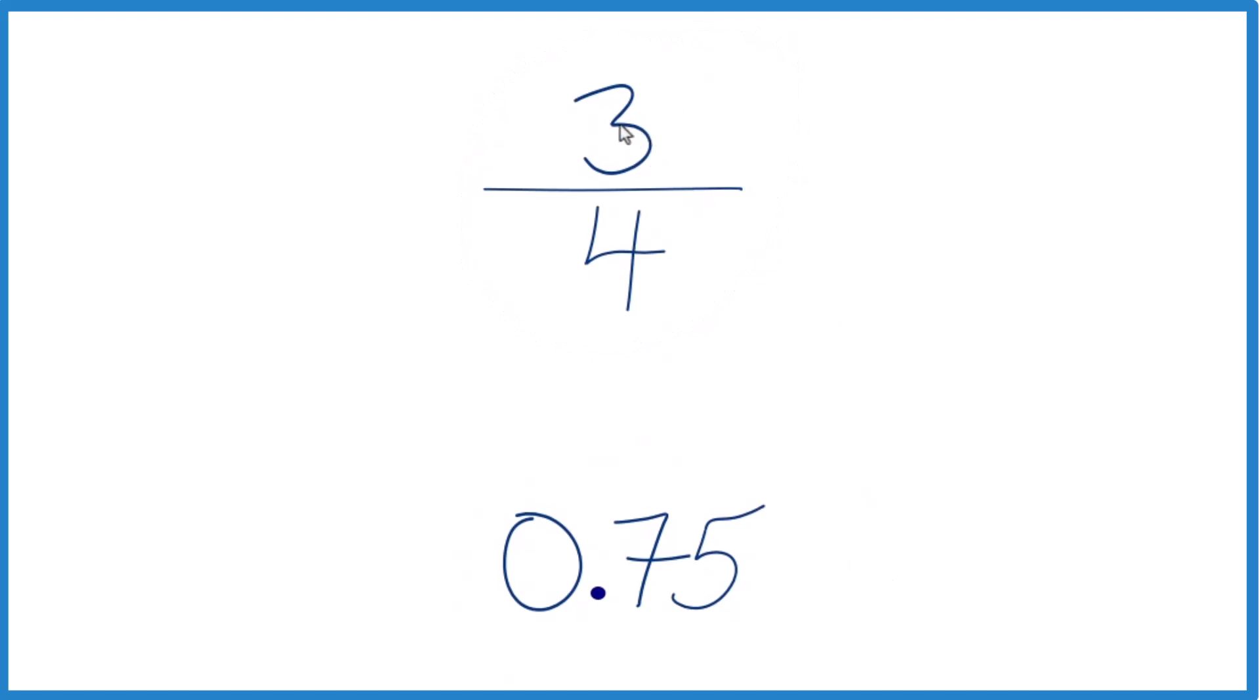One is we could convert 3 fourths to a decimal and compare the decimals, or we could convert 0.75 to a fraction and then compare the fractions. It's usually easier to compare decimals. So let's convert 3 fourths to a decimal.